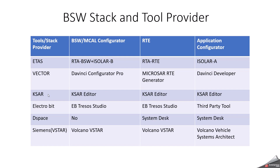KSAR is coming from KPIT. For the base software, they have a specific tool called KSAR editor. For RTE and application side as well, it is called KSAR editor. When you receive a base software from Electrobit in your project, you would use the base software configurator tool called EB-TRESOS Studio. On the RTE side also they use EB-TRESOS Studio, but on the application side they use a third-party tool, which might be DaVinci Developer.